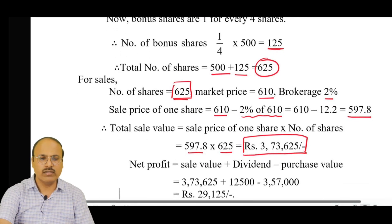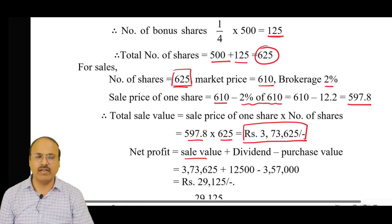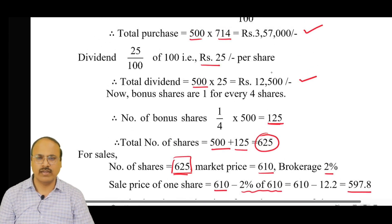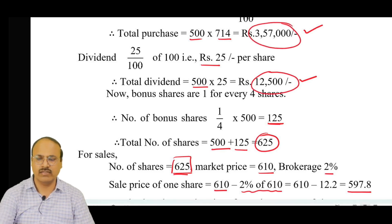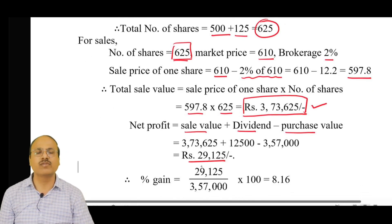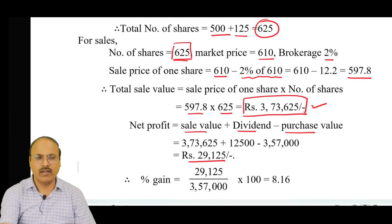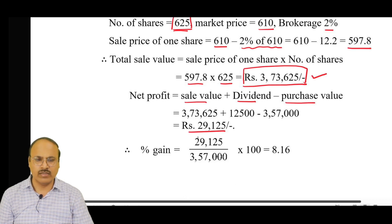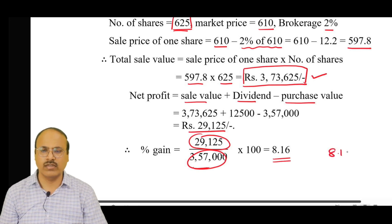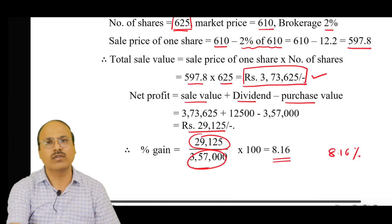The net profit is the sale value plus dividend minus the purchase value: 3,73,625 plus 12,500 minus 3,57,000 equals rupees 29,125. The percentage gain is net profit divided by the original purchase value multiplied by 100, which is 29,125 divided by 3,57,000 multiplied by 100, giving approximately 8.16%. This is the percentage gain received over these transactions.